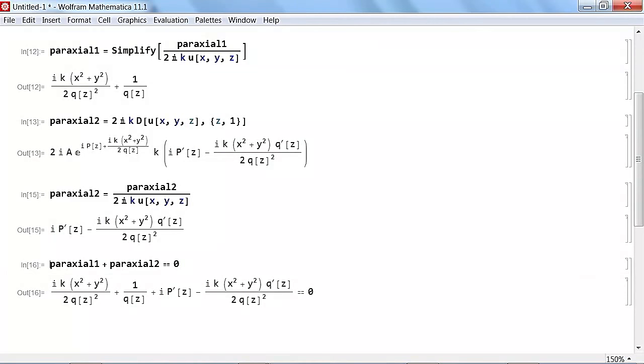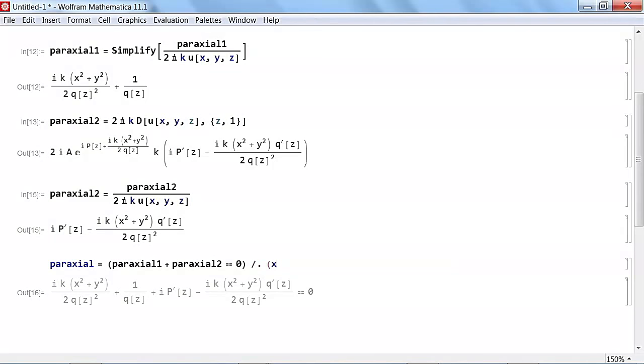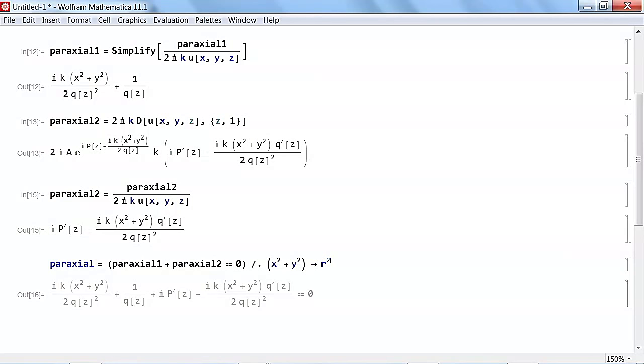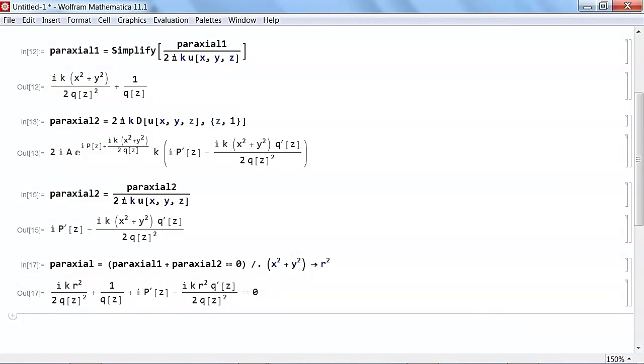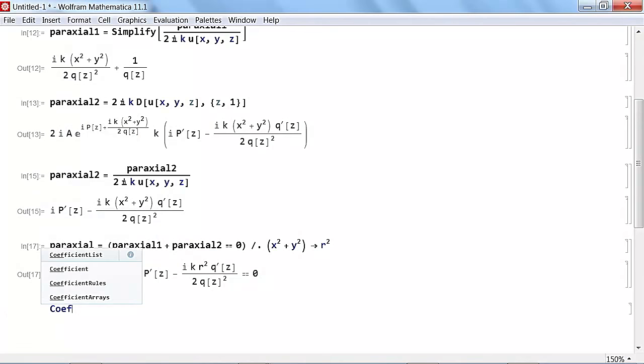Well, we made a substitution. We made a substitution that whenever we saw an X squared plus Y squared, we're going to call that R squared. We did that in our heads by pattern matching. Mathematica is great at pattern matching and it's all symbolic algebra is. So when we write it this way, we get the equation which is quadratic in R. This is what we used to derive equations for P and Q. We did it by looking at the coefficients of the quadratic equation. I can get these coefficients by using the Mathematica function coefficient list.